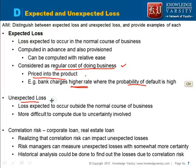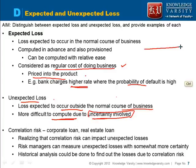Unexpected loss is the loss which is expected to occur outside the normal course of business. It is more difficult to compute because of the uncertainty involved. While the expected loss may be $0.8, sometimes the actual loss can be as low as $0.2 or as high as $90 — this variability creates uncertainty.